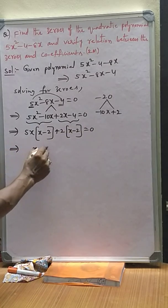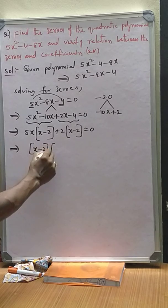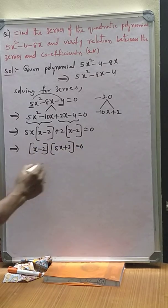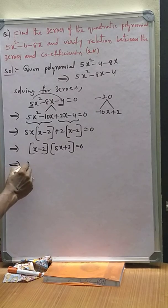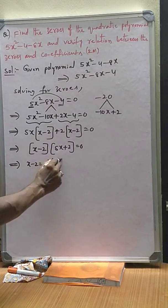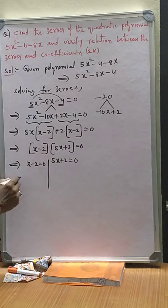Again, x - 2 is taken common. 5x + 2 = 0 plus x - 2 = 0. Or 5x + 2 = 0.